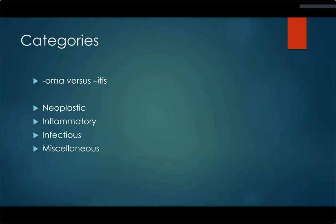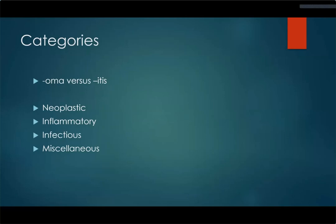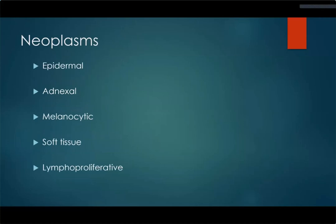Just like anything else in medicine, when you're looking at skin under the microscope, you can still approach it in broad categories. Is it something neoplastic? Is it inflammatory, infectious, or just a grab bag of miscellaneous things? In those categories you then dive deeper. Once you're hopefully in the right bucket — oh, this is an '-oma,' some sort of neoplasm — well then, is it an epidermal neoplasm? Is it adnexal, melanocytic, soft tissue, lymphoproliferative, or some sort of cutaneous metastasis? The rest of residency is for diving into these.